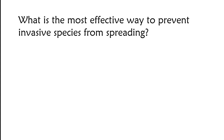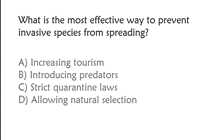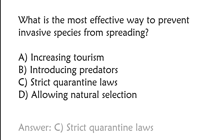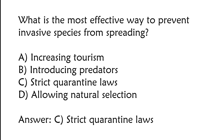What is the most effective way to prevent invasive species from spreading? A) Increasing tourism, B) introducing predators, C) strict quarantine laws, D) allowing natural selection. The correct answer is option C, strict quarantine laws.